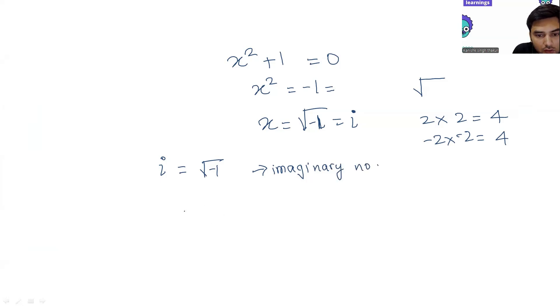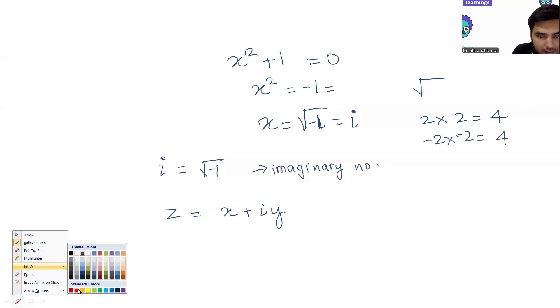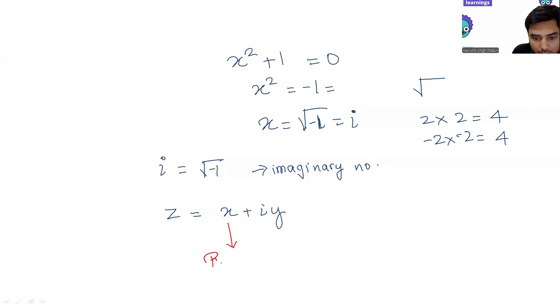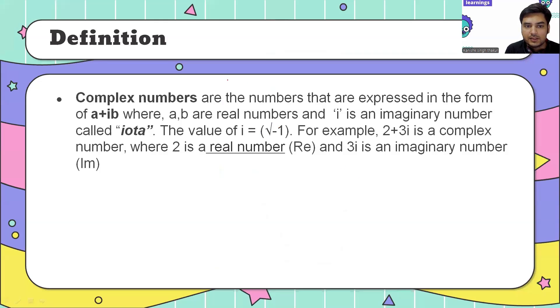So complex numbers can have two parts. I can write some other numbers also with iota. So complex number I normally represent by z, and it is x plus i times y. This is the real part of complex number. This is the imaginary part of complex number. Real part normally I denote by Re(z). Imaginary part I denote by Im(z).